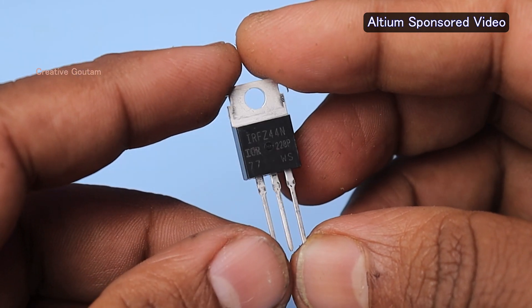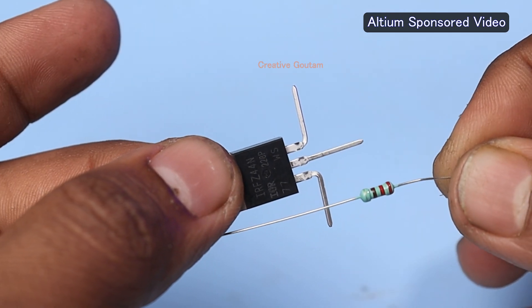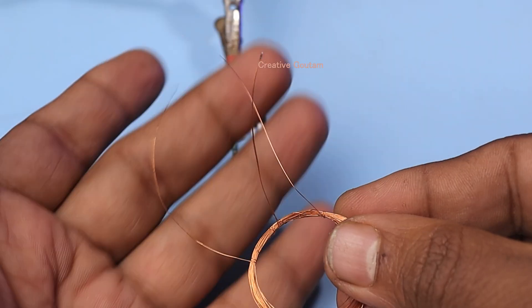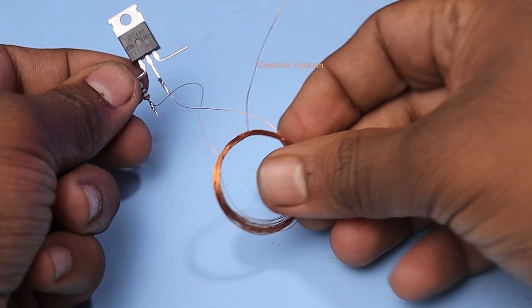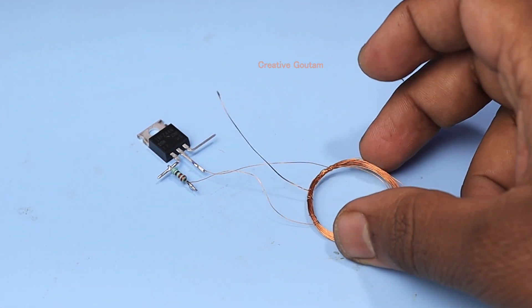Then I took a Z44N MOSFET and a 220 ohm resistor and connected the resistor to the gate pin of the MOSFET. Then I connected one side wire of the coil to the resistor and the other to the drain pin of the MOSFET and left the center wire.